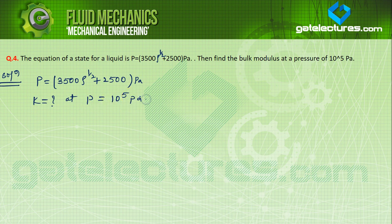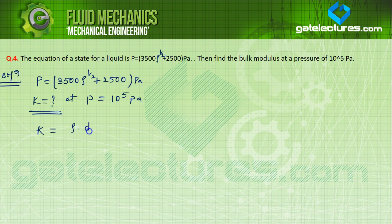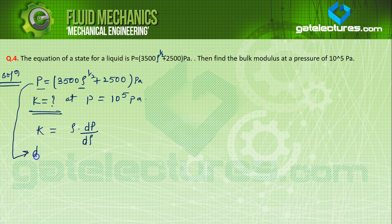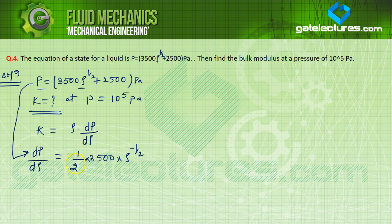The question gives P = 3500 × ρ^(1/2) + 2500 Pa, and we need to find K at P = 10⁵ Pascal. To solve this, the formula for bulk modulus in terms of density is K = ρ × (dP/dρ), which we proved in the last lecture. We have the relation P with ρ, so we differentiate to get dP/dρ = (1/2) × 3500 × ρ^(−1/2).